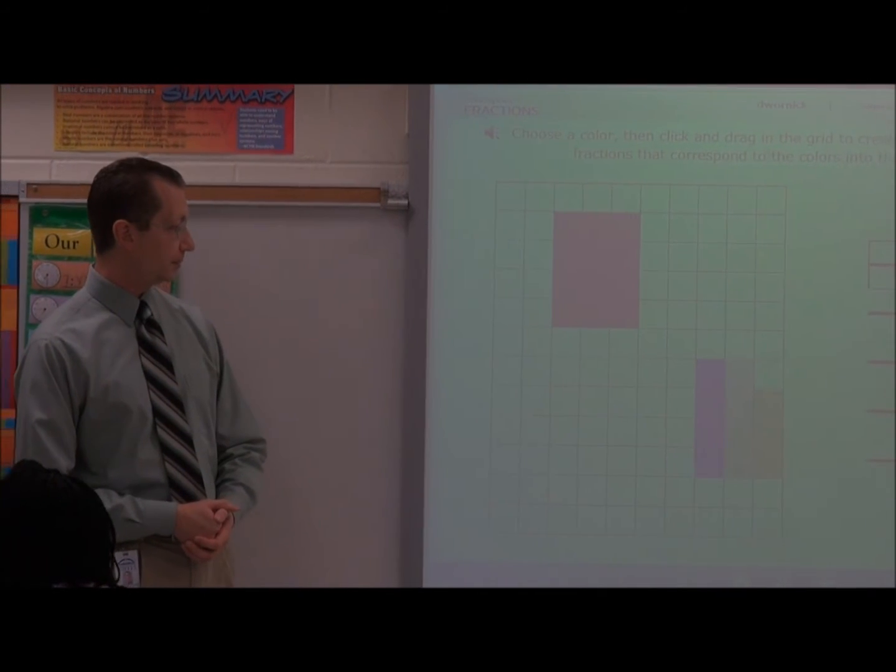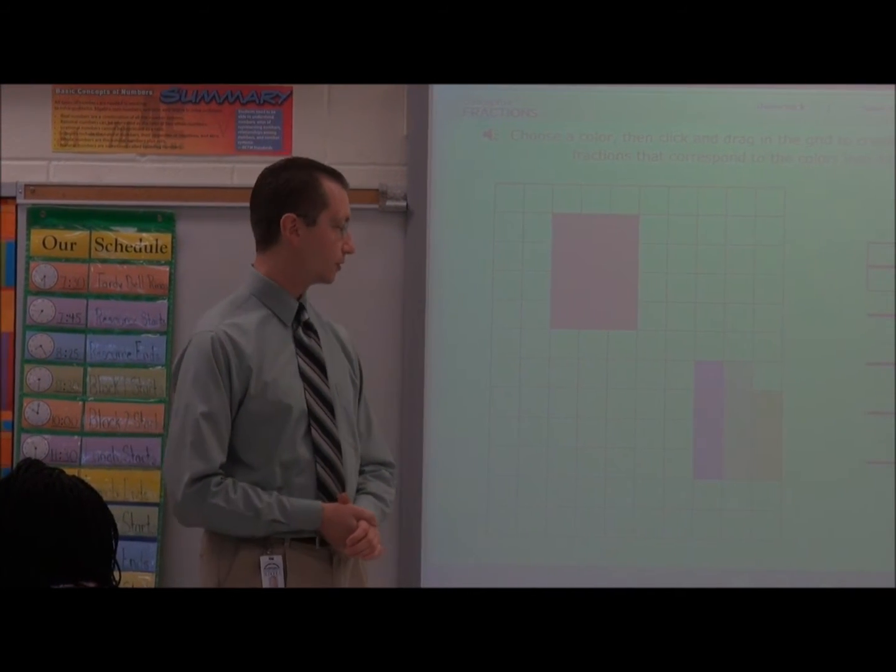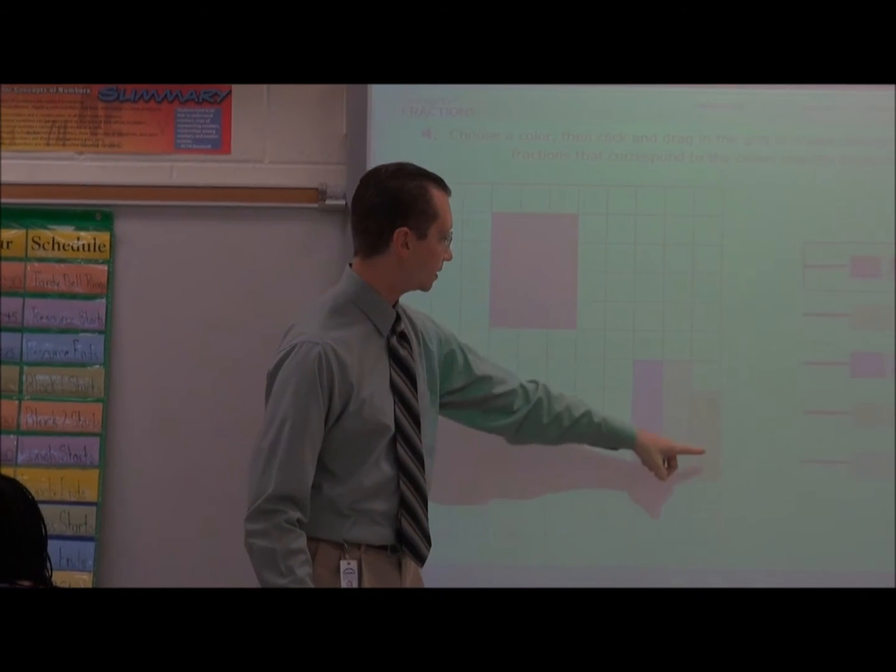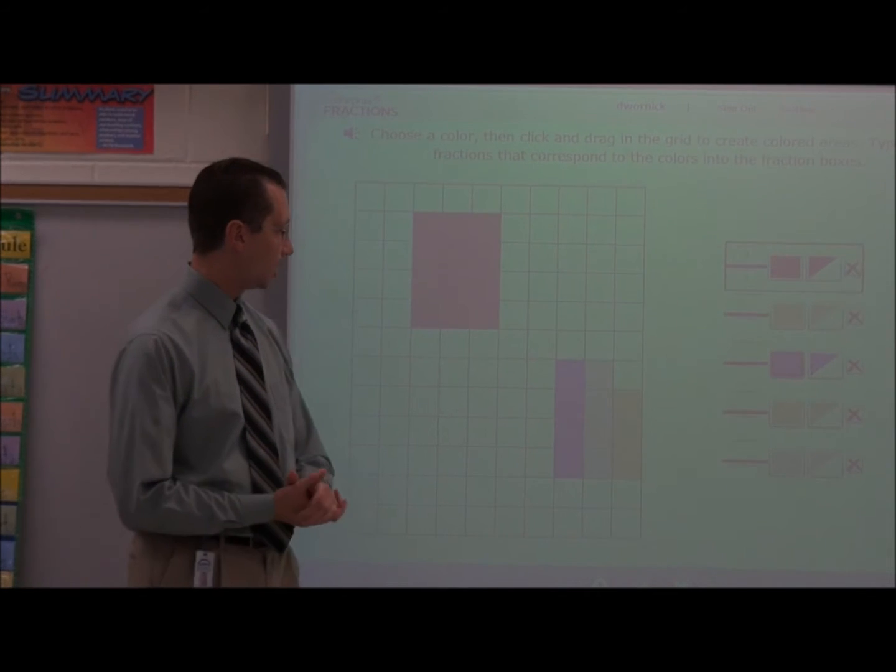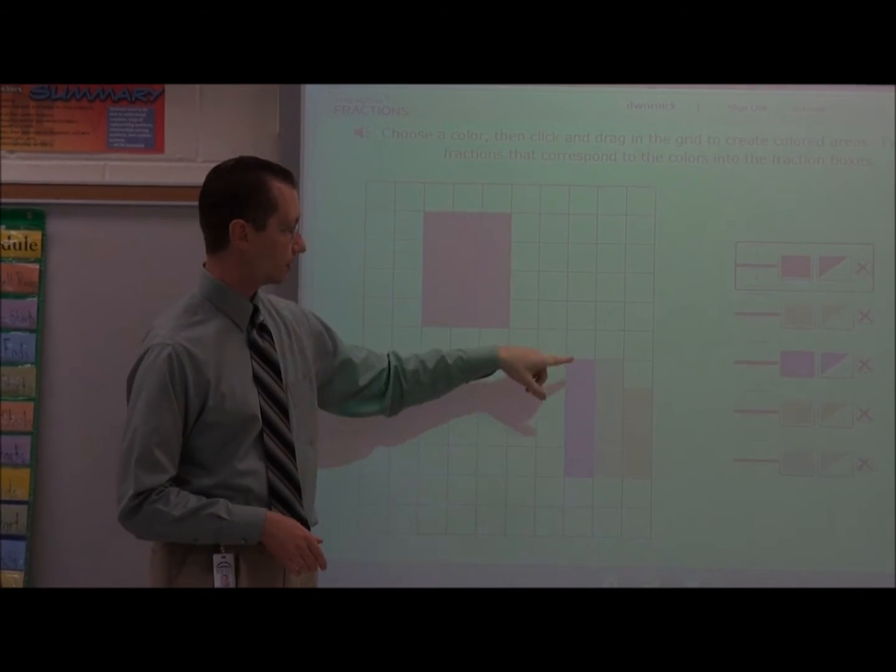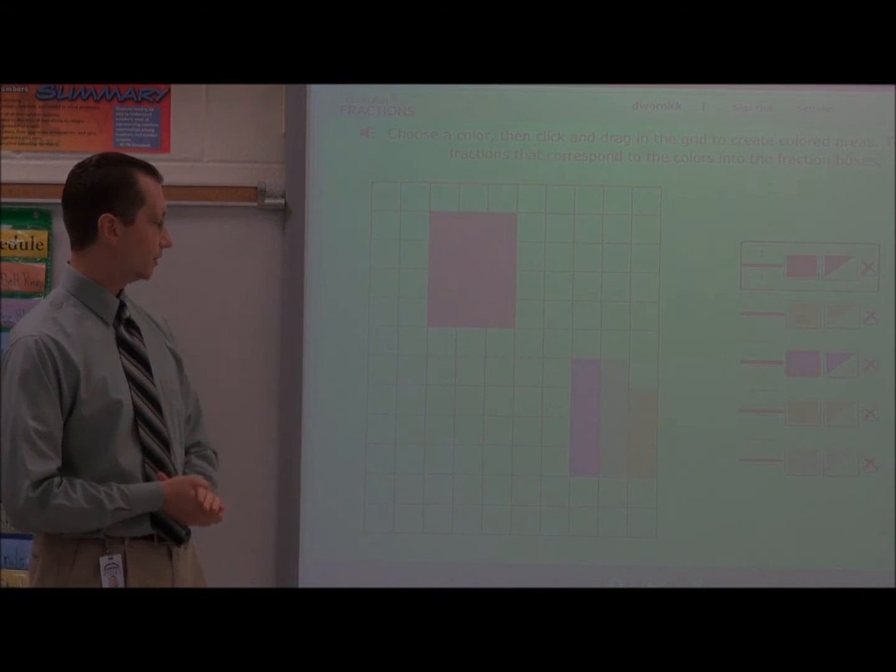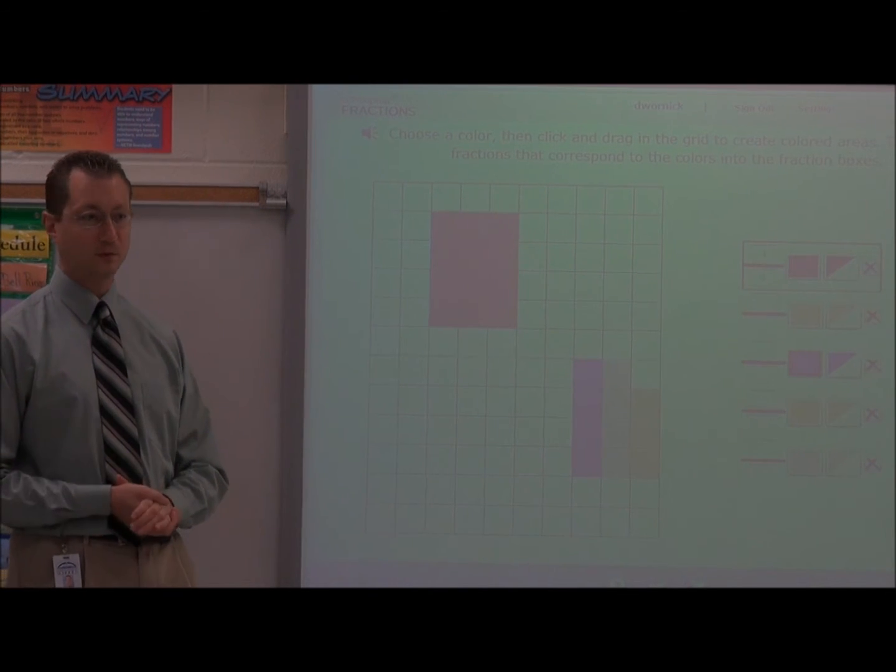So this is eleven twelfths. I noticed that when you answered your problem that you didn't say thirds or fourths, which was great. You used twelfths because we can see that our rectangular model here is in twelfths. There are twelve parts to it. And the twelve parts make our whole that's there. So that's great that you used twelfths instead of thirds and fourths.